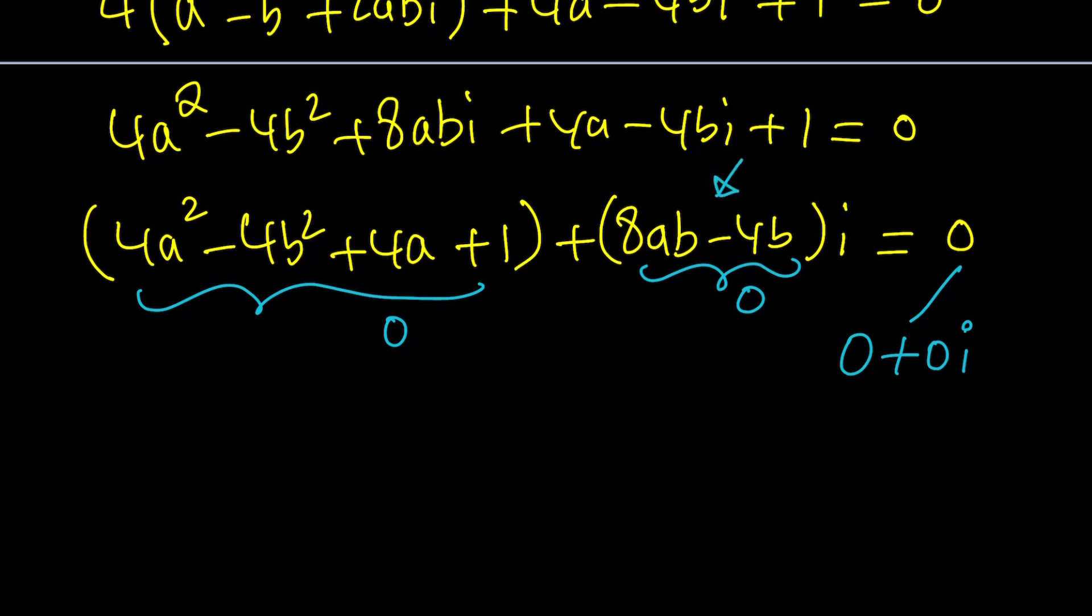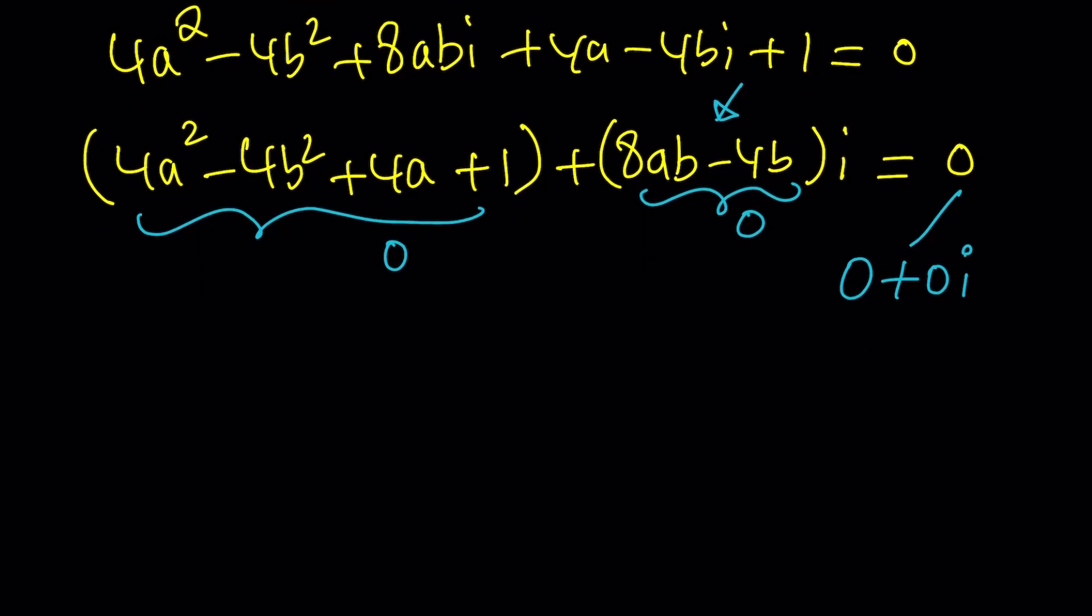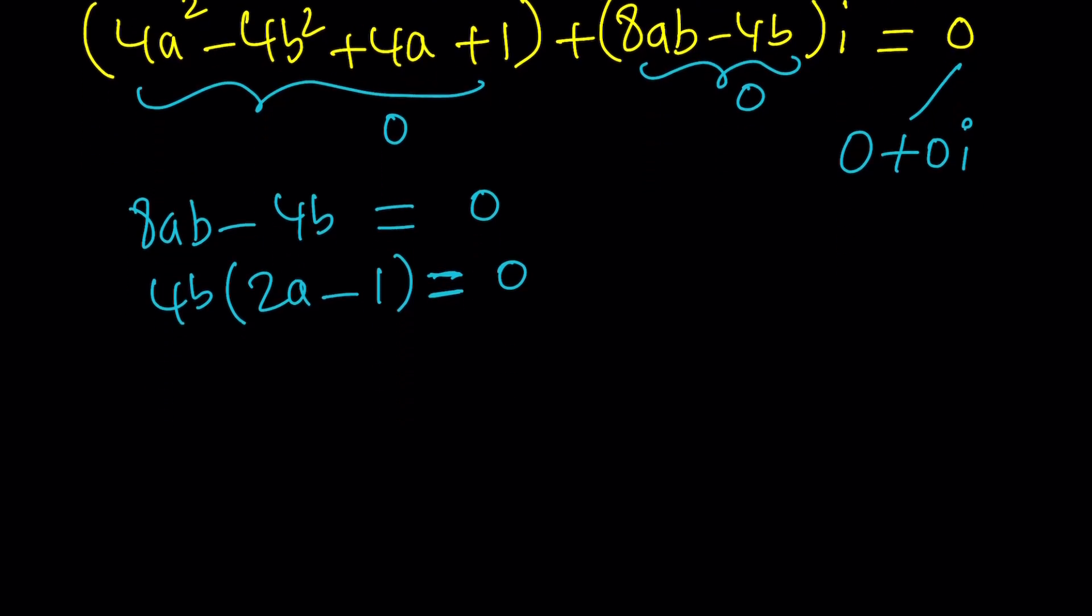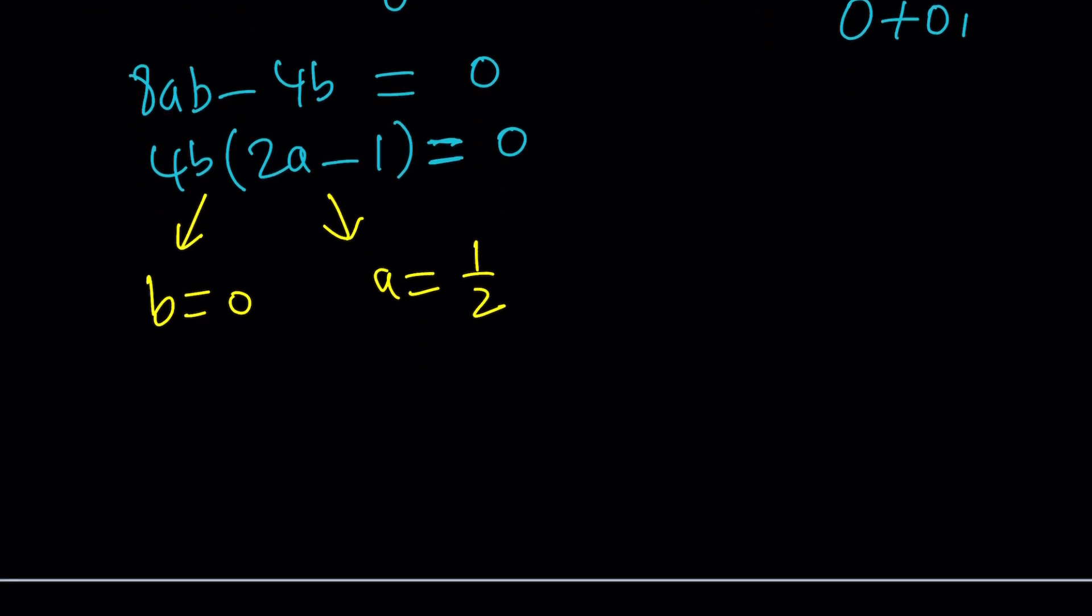So this is equal to 0, this is equal to 0. Let's start with the second equation because that's easier to solve. Notice that the first equation is quadratic in a and b, so if you're trying to solve that equation you would go into so much trouble. That would be painful. Now let's set the second equation to 0 and factor out 4b. We have two factors and their product is equal to 0. From zero product property, b = 0 or a = 1/2.